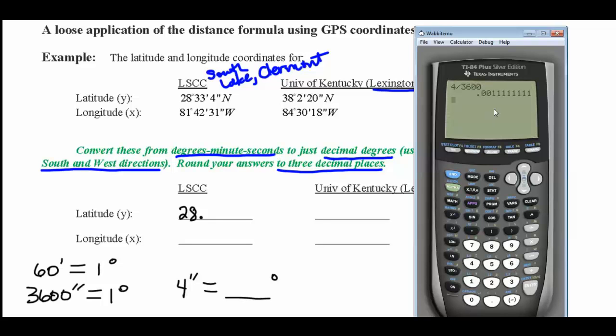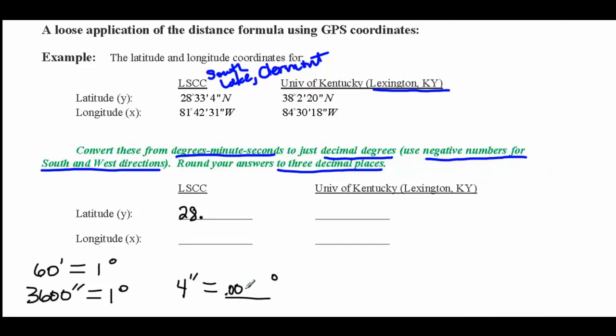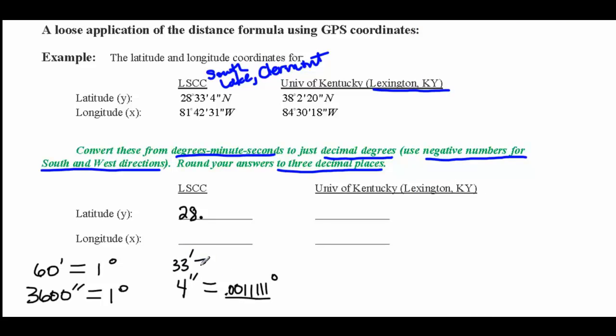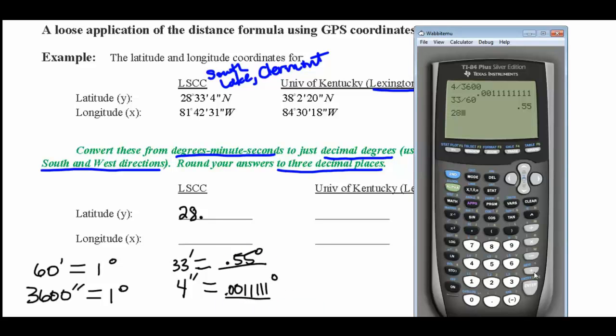I'm just going to look at that decimal number for the moment and convert my minutes to degrees, and then I'll have the decimal value for the latitude. Since the number of minutes is 33, I'm going to take 33 and divide it by 60 because there's 60 minutes in a degree, and I end up with the decimal approximation .55. So 33 minutes equals .55 degrees. 28 plus .55 plus .00 and a repeating one gives me 28.55 and repeating ones. I'm to round to three decimal places. So 28.551 is going to be my latitude in degrees.